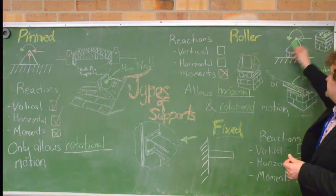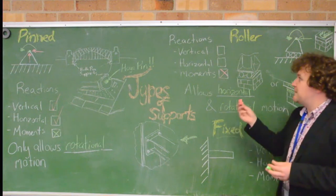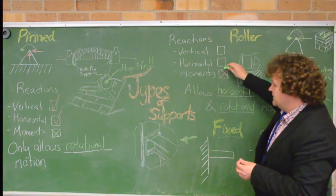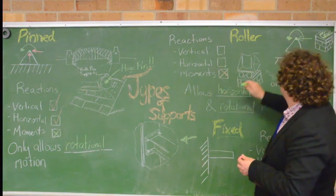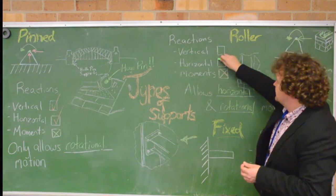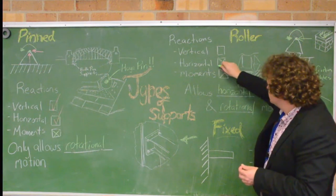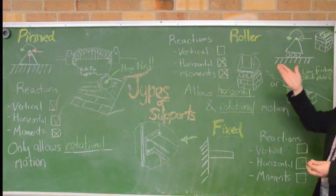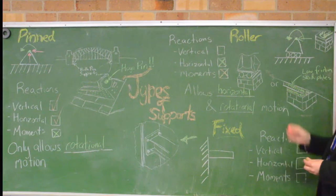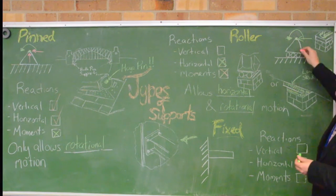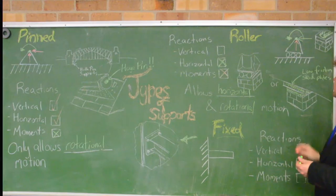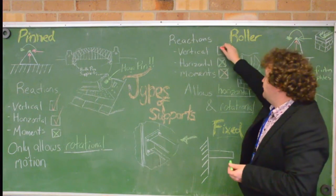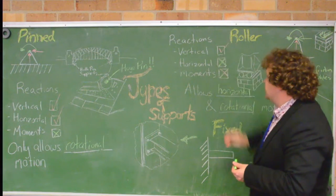So it is able to move back and forwards, which means that it isn't going to have a horizontal reaction. Now, just like a skateboard, if you stand on it, it's able to stop you from falling into the ground. It's able to give a vertical reaction. So it's not going to move up or down. So it does have a vertical reaction that's going to be occurring.